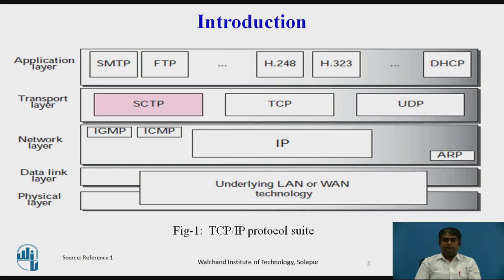SCTP is mostly designed for internet applications that have recently been introduced. These new applications — such as IUA which uses ISDN or IP, M2UA and M3UA which operate on telephone signaling, H.248 which is media gateway control, H.323 which is IP telephony, and SIP — all need a more sophisticated service than TCP can provide. SCTP provides this enhanced performance and reliability.